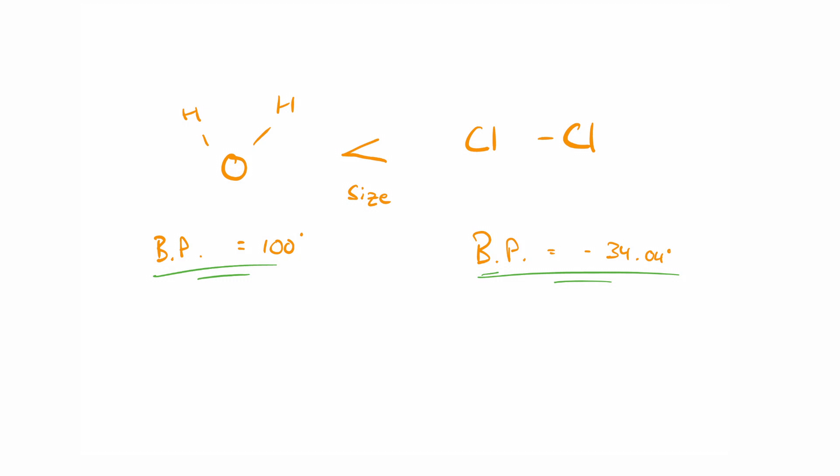A classic example that you'll see in everyday life where hydrogen bonding exists is water because you've got oxygen bonded to two hydrogen atoms to make a water molecule. Water is a smaller molecule than chlorine, but its boiling point is 100 degrees higher and that just shows you how strong a hydrogen bond is.